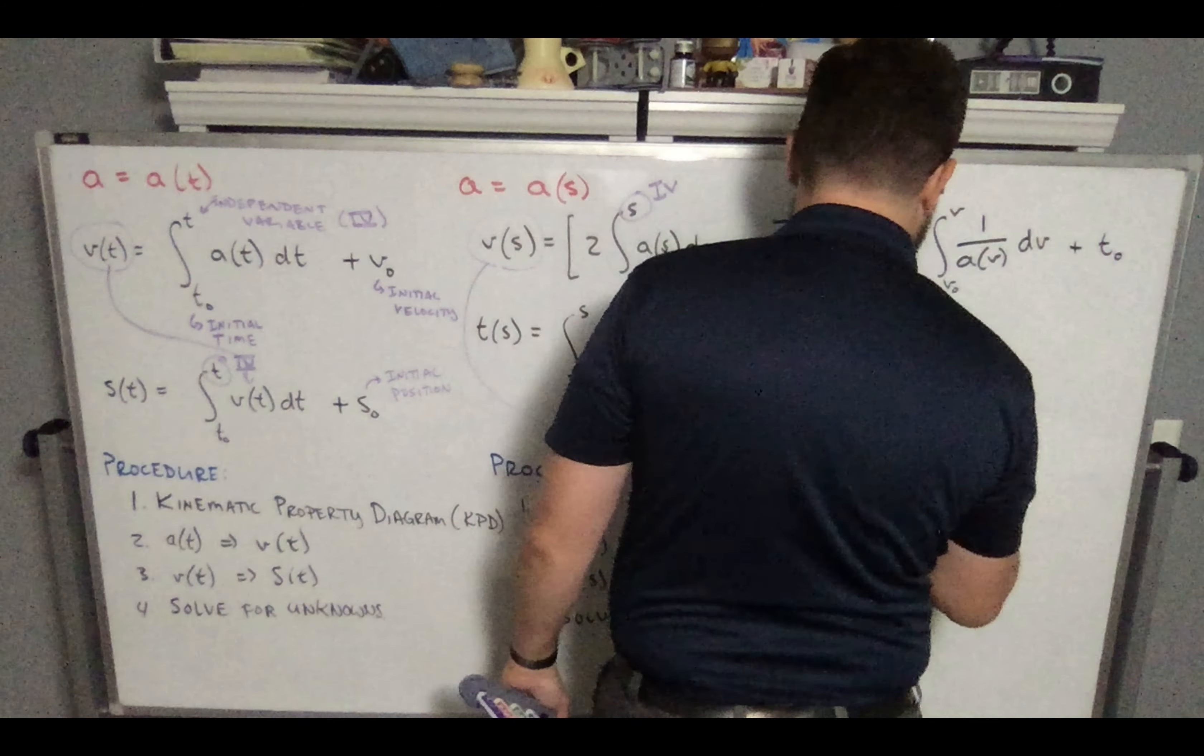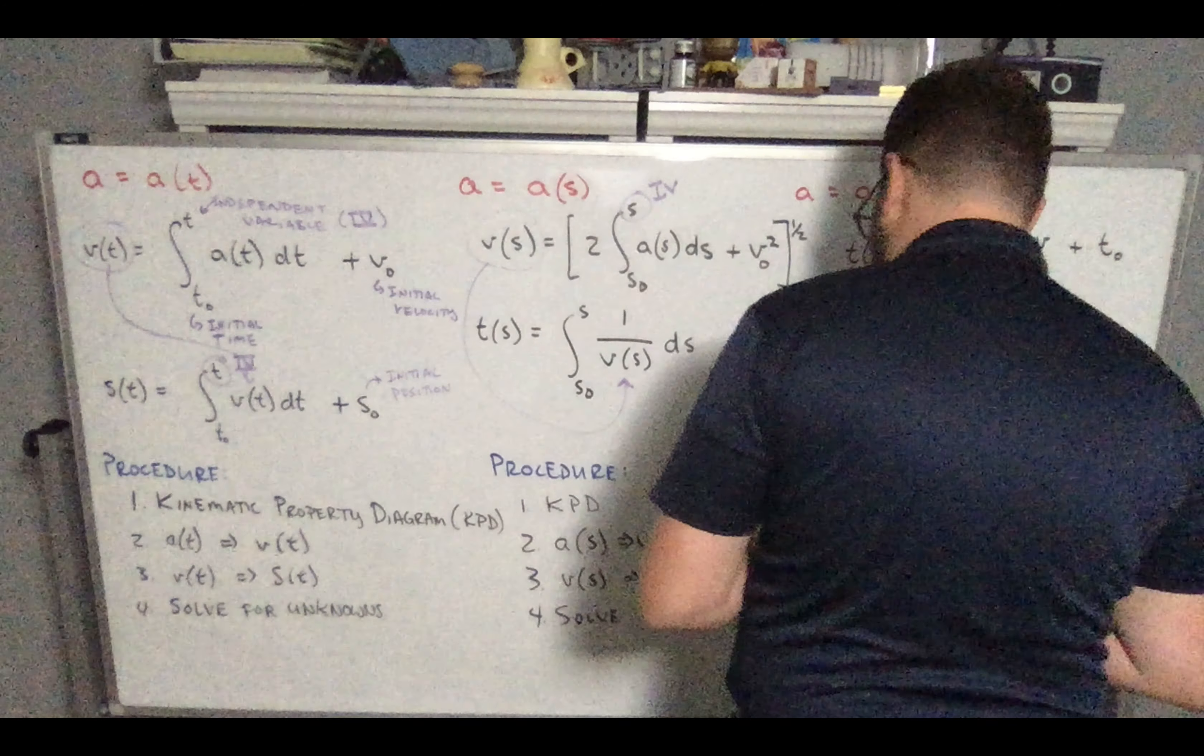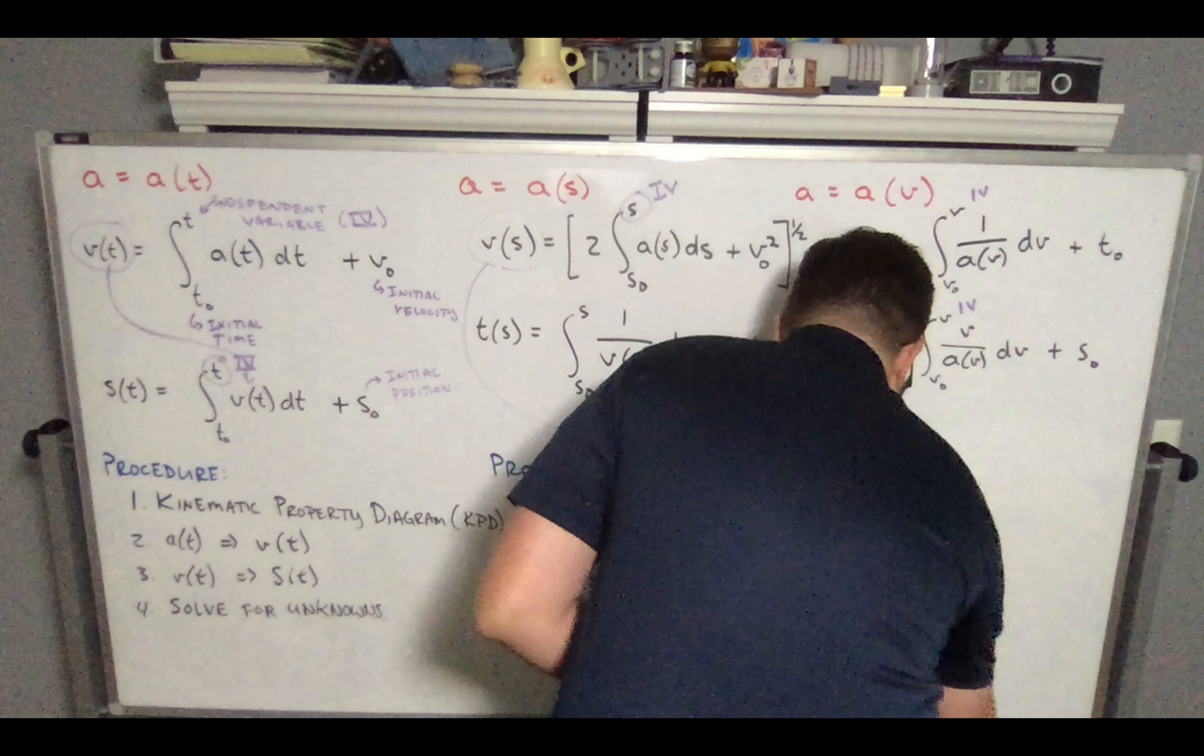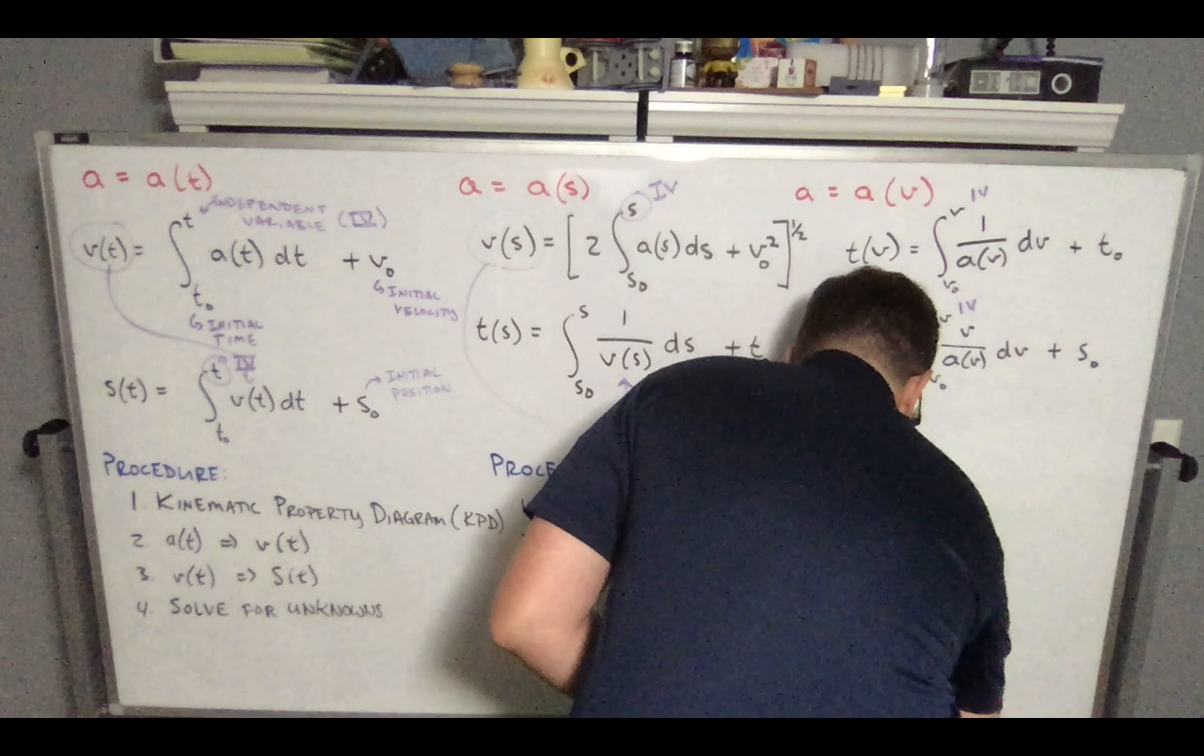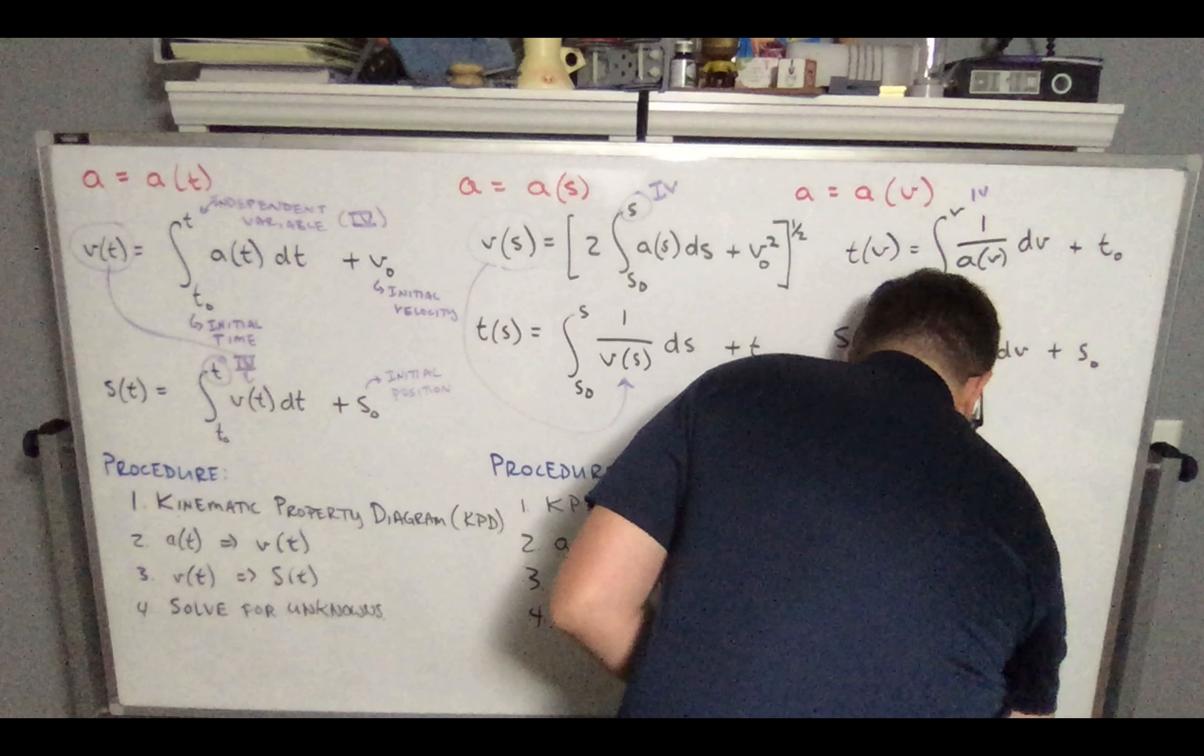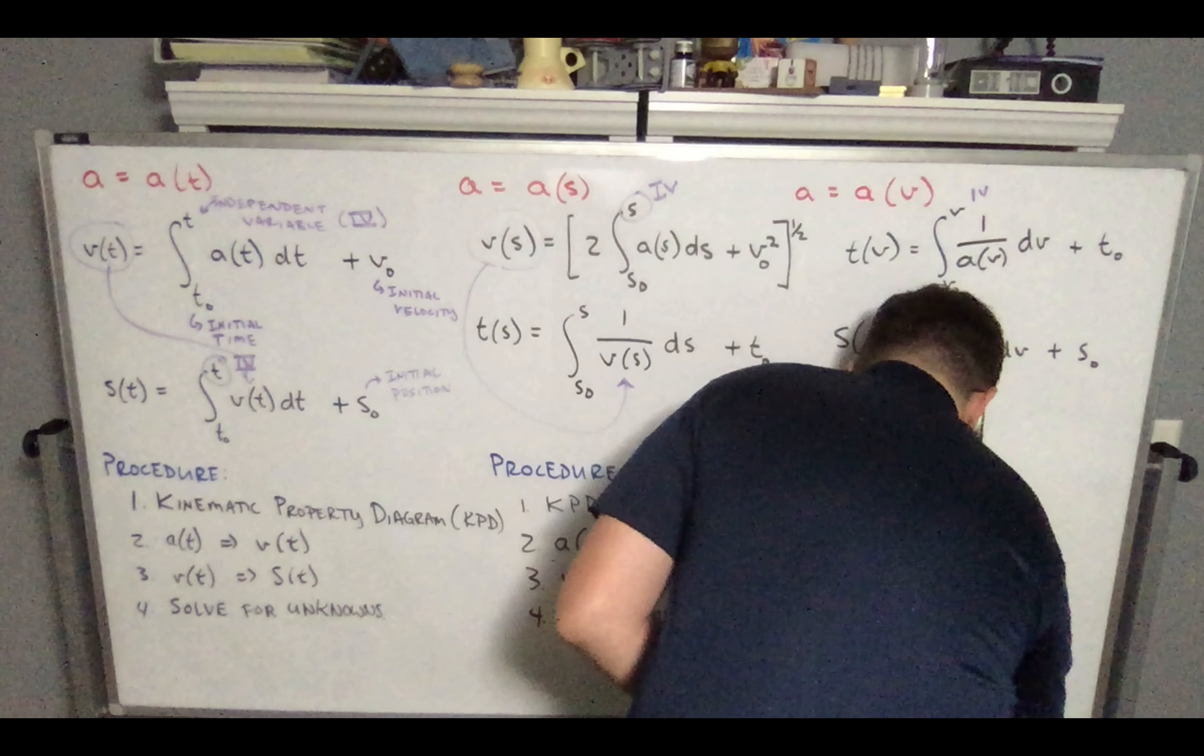Now you'll notice in both of these cases that the velocity term is given, right, and our acceleration is a function of velocity, so we don't have to work the equations sequentially. Just keep in mind these are independent variables here. And so our procedure is going to look very much the same, in which we'll start with our kinematic property diagram, and then we will go from acceleration as a function of velocity to time as a function of velocity, or acceleration as a function of velocity to position as a function of velocity, and then solve for various velocities.